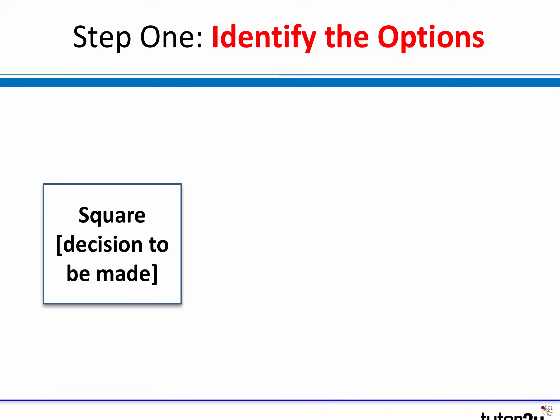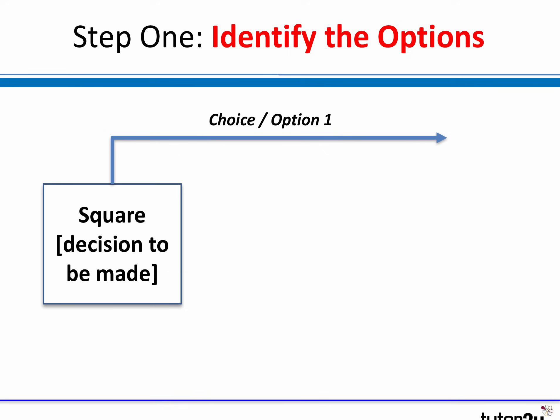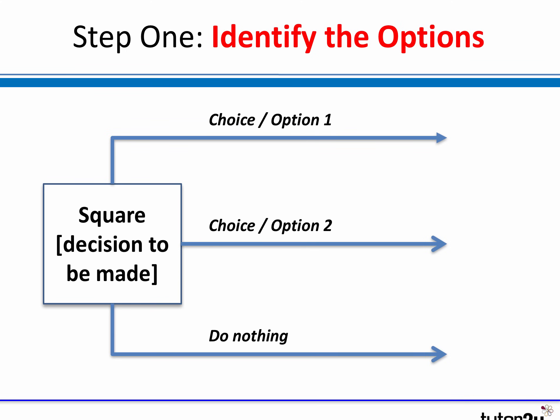So step one — we have to make a decision. Typically in a decision tree, the decision to be made is represented by a square, and outputting from the square are the options available to you, typically as lines. So in this case there is option one, option two, and of course there's always the option to do nothing.